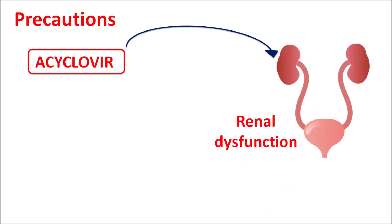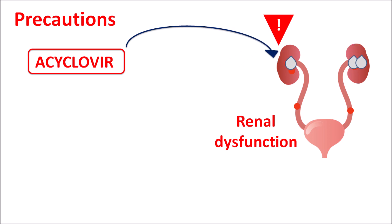One important precaution of acyclovir is that this drug should be carefully given in patients with any renal dysfunction. Acyclovir can be excreted through the renal system, where it can deposit into the renal tubules and form crystals, which may produce renal tubular damage. In patients with already existing renal dysfunction, this drug can produce further renal damage. Therefore, whenever acyclovir is prescribed, sufficient hydration should be maintained, because water can reduce the formation of crystals within the renal tubules.